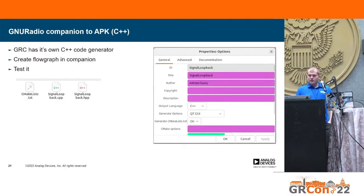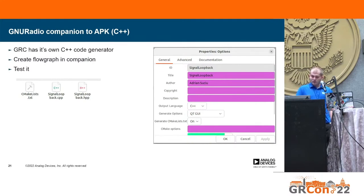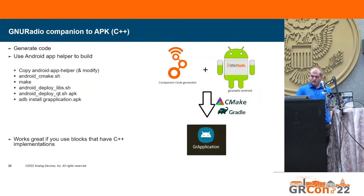GNU Radio also ships GNU Radio Companion, a GUI application to create and test flow graphs. You can create GUI applications with GNU Radio Companion using GRQT GUI. The companion has both C++ and Python code generators — you create your flow graph and generate code from it. Upon C++ code generation, a CMake project is created. We can then take this generated code and apply the Android app helper scripts to create an Android application, so you can just create your GNU Radio flow graph in the companion and generate Android APKs without writing much C++ at all.